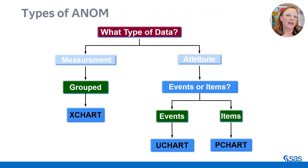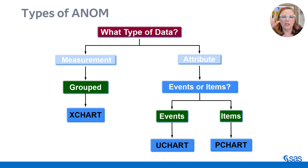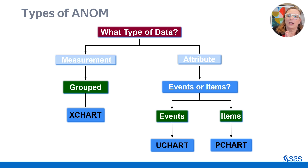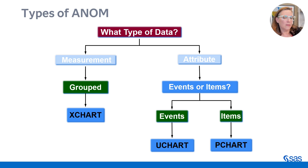What kind of ANOM are you using? This goes back to the same question tree we had when we talked about Shewhart charts. We're looking at the difference between measurement data and attribute data. If you have measurement data — typically grouped measurement data — there is an X chart statement you would use in PROC ANOM. If you have attribute data, you need to consider whether it represents more of a binomial counting process or a Poisson counting process. For binomial data, use a P chart statement; for Poisson data, use a U chart statement.